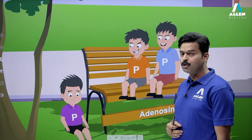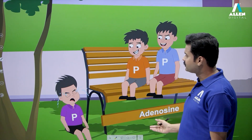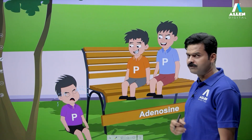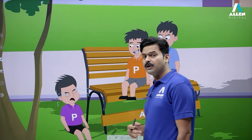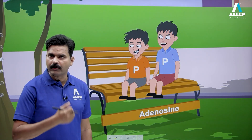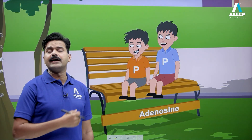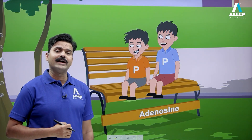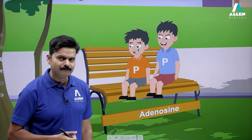This ATP molecule is going to be broken down to adenosine diphosphate, which releases energy in our body. This released energy is used to perform various types of functions. And so, ATP is the energy currency of the cell.